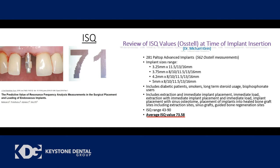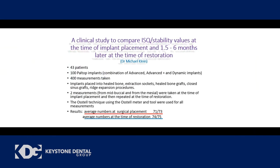After showing those results, most people asked: what happens after the implant heals? I looked at another 100 implants taking 400 measurements — two at time of placement and two at time of restoration (between 1.5 and 6 months healing). ISQ values at placement were 71–73, consistent with the prior data. After healing, values were 74–75. So I'm maintaining good stability, with ISQ values of 70+ confirming good healing around the implant surface.